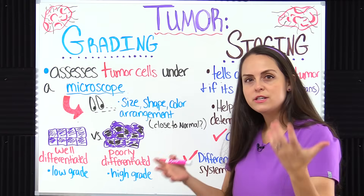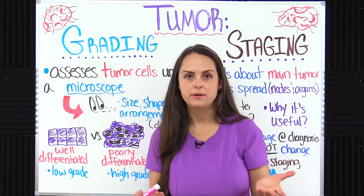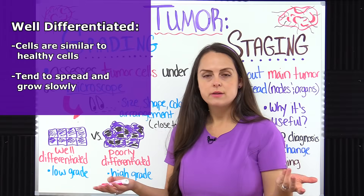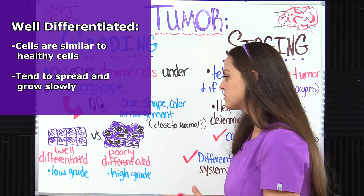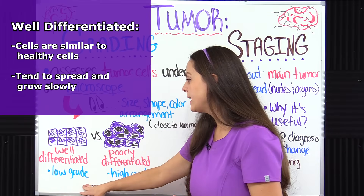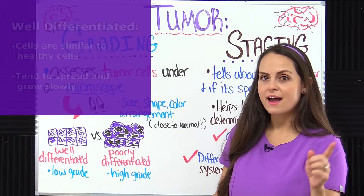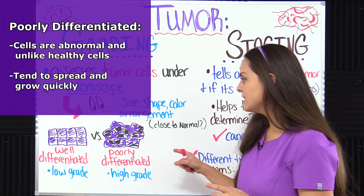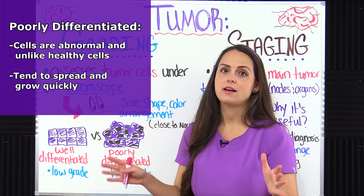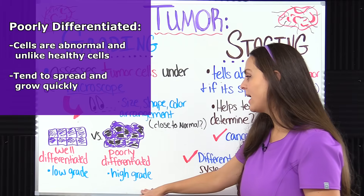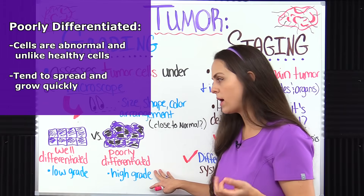You may see some different terms used to grade tumors. One term is well differentiated, which means that these cells are very similar to how healthy normal cells should look in their appearance and arrangement. These grades are termed low grade and they tend to spread and grow fairly slowly. On the flip side, poorly differentiated cells are very abnormal — they don't look much like normal cells at all — and they are usually high grade, meaning this cancer is going to grow and spread quickly.